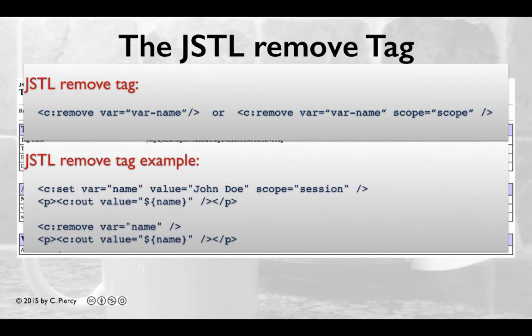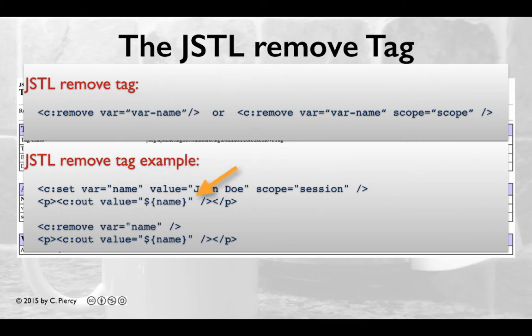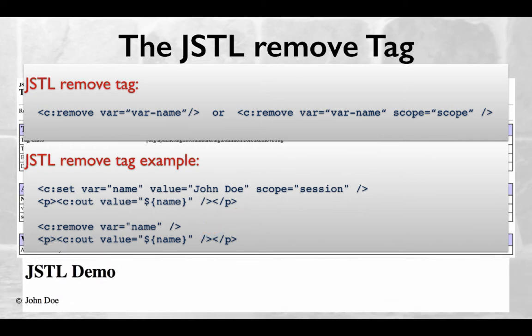In this example, we first set a variable using the JSTL set tag, setting the variable name to the value of John Doe and setting it to scope session. We print that out using the JSTL out tag, then we remove it and try to print it again just to show that it would be removed. The resulting output would have John Doe printed once to the view before the variable is removed using the remove tag.